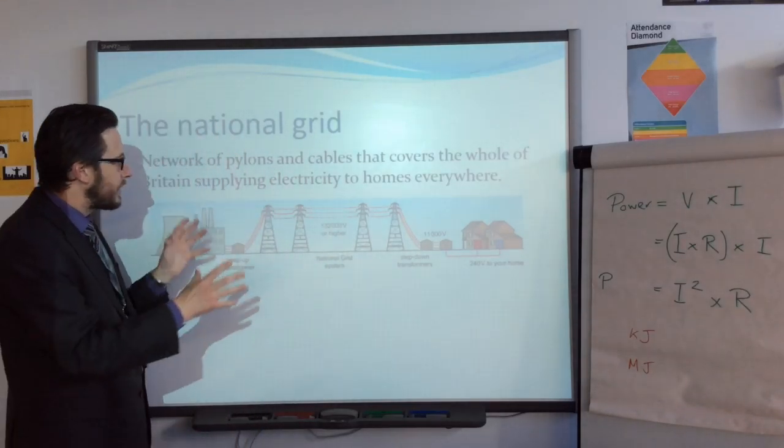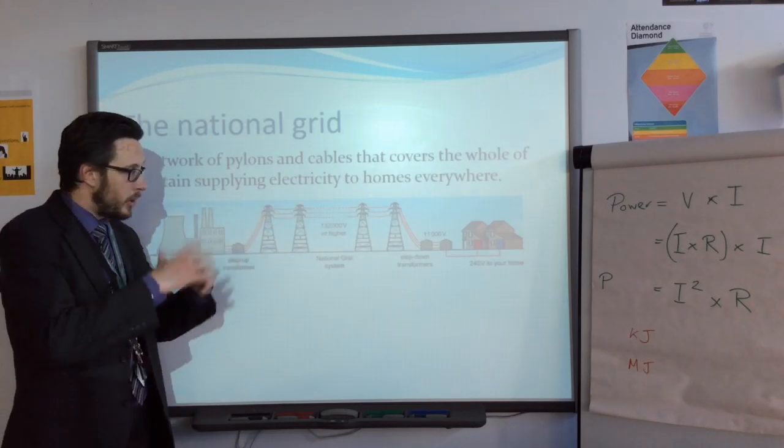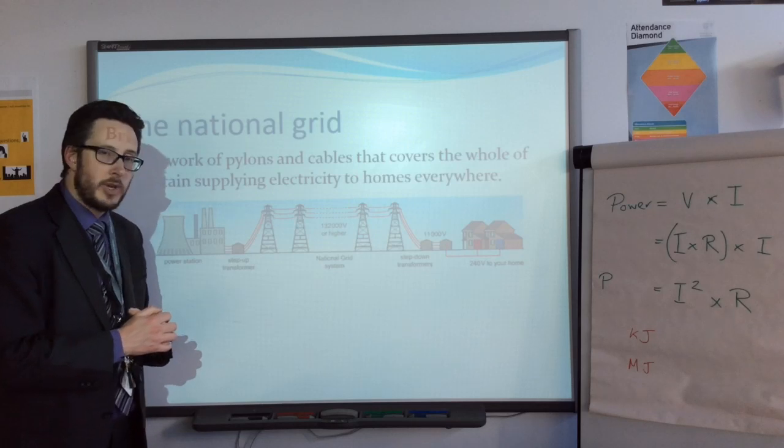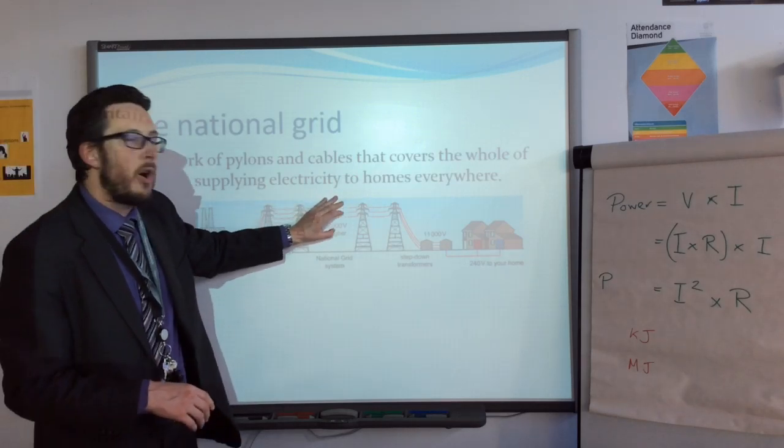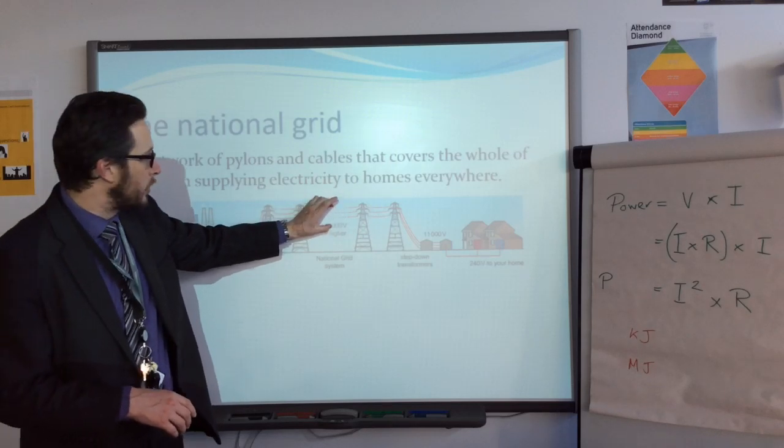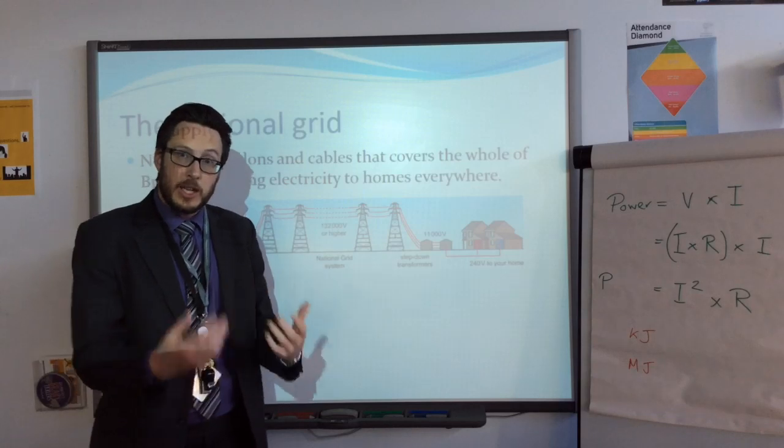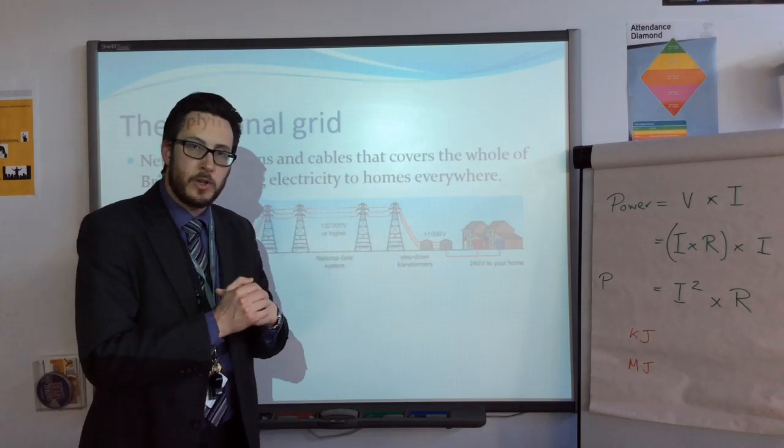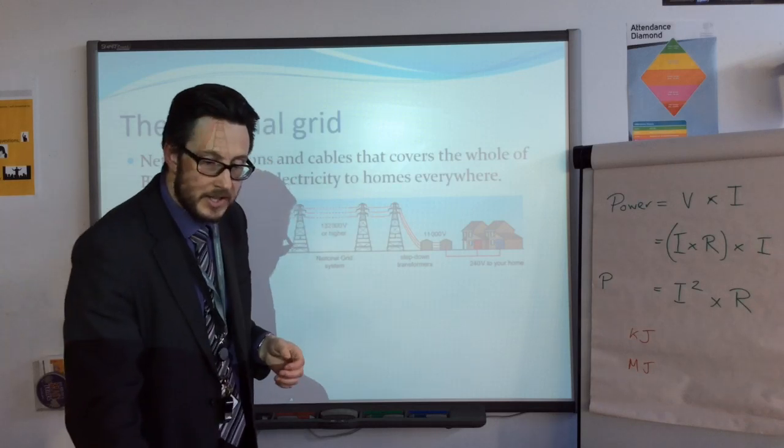The national grid. The national grid is a series of pylons and cables which supply electricity to all the homes in the country. The key bits about this are, it's a very high voltage that travels through those cables of alternating current. That's to reduce energy wastage, because energy is lost through those wires. They pump it up to a really high voltage, so less energy is lost in that transfer.